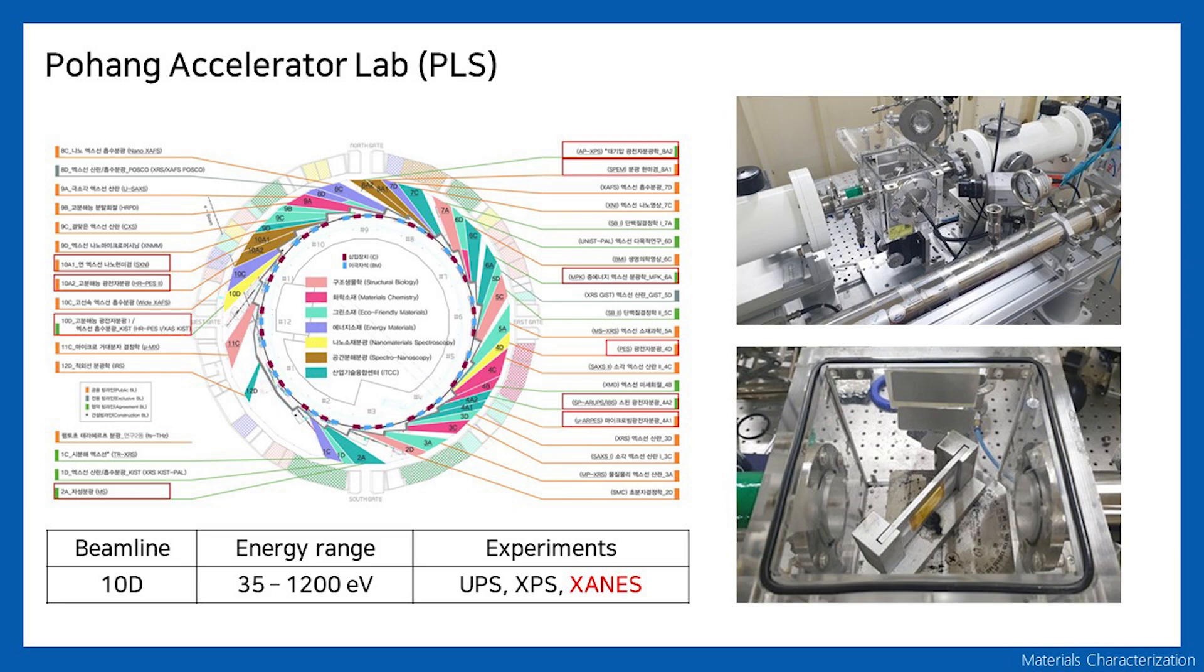XANES analysis mainly uses X-ray obtained from radiation accelerators. PLS is a representative radiation accelerator equipped with a beamline facility capable of XANES analysis in Korea. The picture on the left is the beamline map of PLS, and XANES analysis is possible on 10D beamlines. The picture on the right is a picture of 10D beamlines.